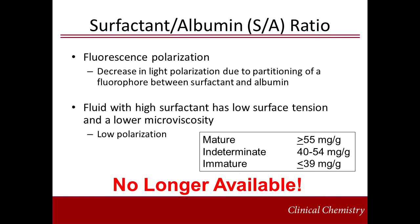The surfactant to albumin ratio can be measured using fluorescence polarization. A fluorophore is added to the amniotic fluid. It can attach to albumin, which slows its rotation, or it moves more rapidly when associated with phospholipids. The change in polarization, which is a function of how rapidly a fluorophore is rotating, depends on the microviscosity of the solution. An elevated surfactant to albumin ratio has been correlated with the presence of fetal lung maturity. The threshold for maturity is 55 milligrams of surfactant per gram of albumin. Test results are affected by blood and meconium. This was a commercially available kit; however, production has been discontinued and it's no longer available.